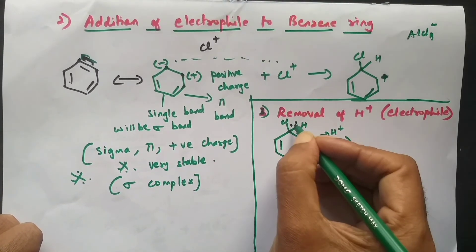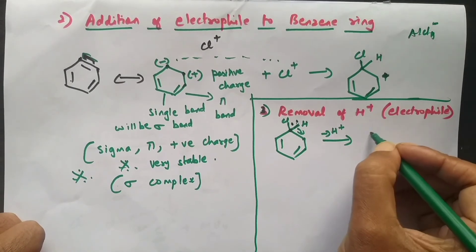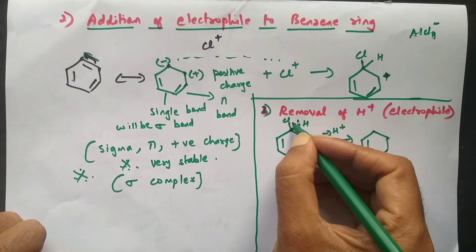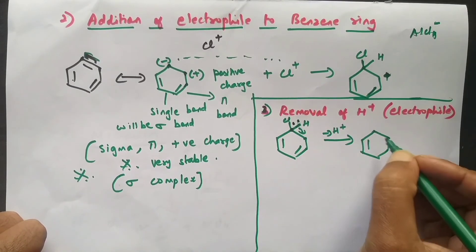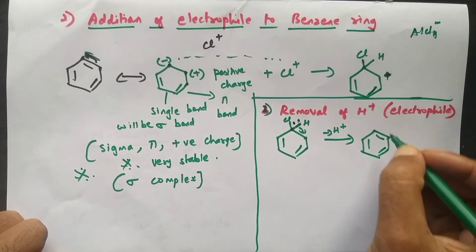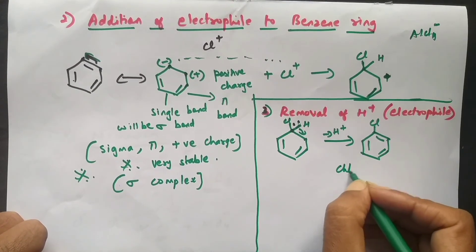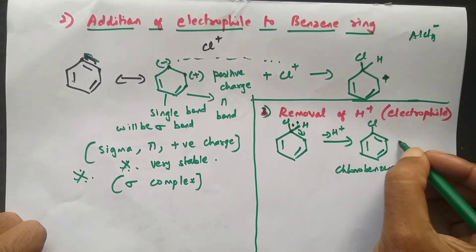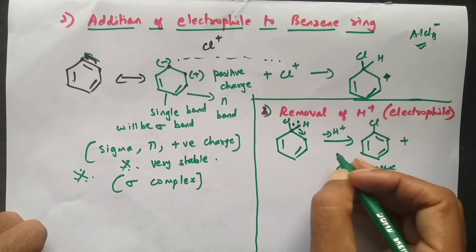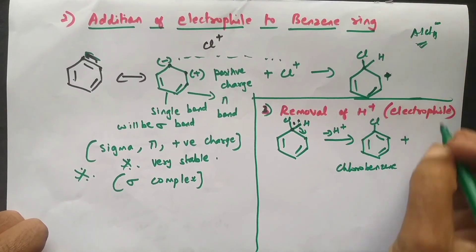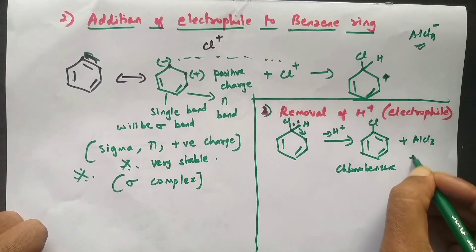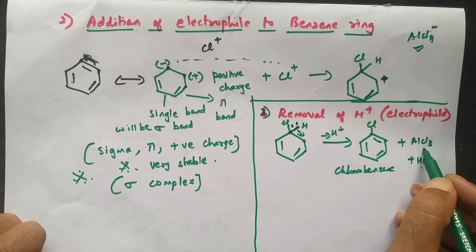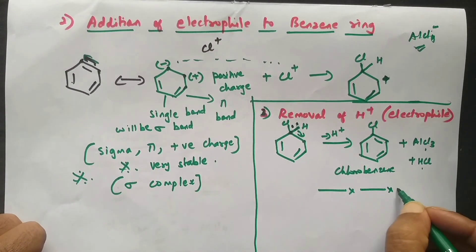As the H⁺ moves out, the two electrons from the C–H bond form a new double bond, giving us back the aromatic ring with three double bonds and a Cl substituent — this is chlorobenzene. The H⁺ then reacts with AlCl₄⁻ to regenerate AlCl₃ plus HCl. This completes the mechanism of halogenation of benzene.